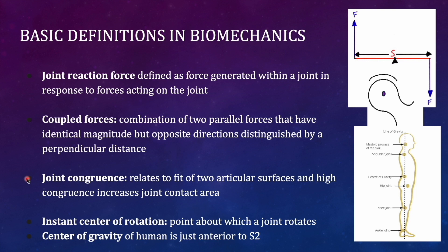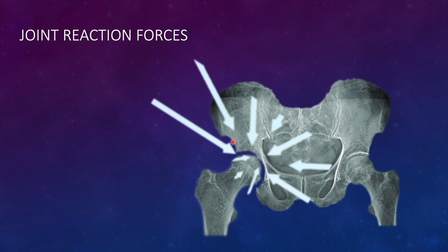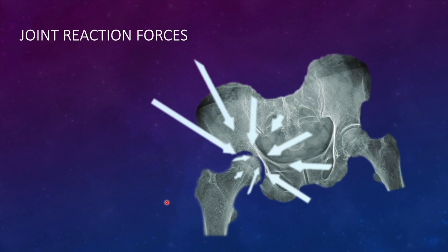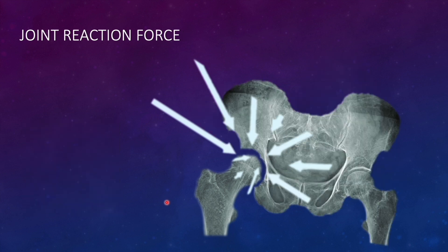The first definition is joint reaction force — the force generated within a joint, which is the sum of all forces acting at a particular time inside the joint. For example, if the patient is abducting or adducting the hip joint, the body weight along with abductor and adductor muscle forces acting inside the joint will result in the joint reaction force.